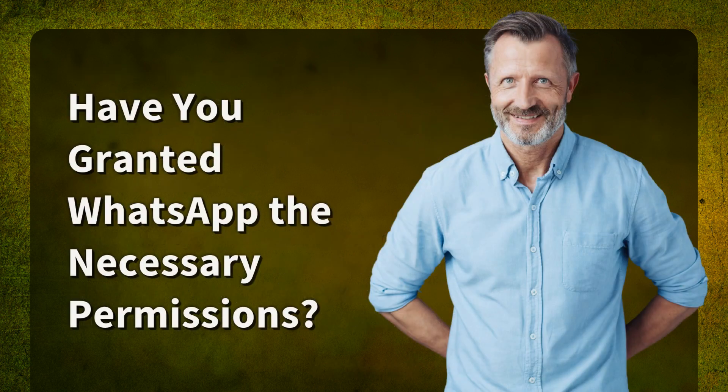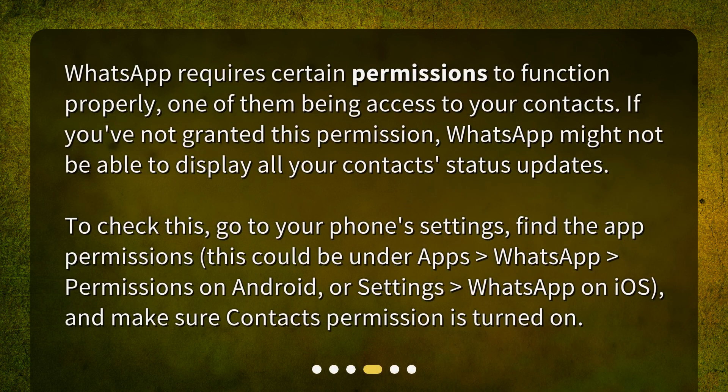Have you granted WhatsApp the necessary permissions? WhatsApp requires certain permissions to function properly, one of them being access to your contacts. If you've not granted this permission, WhatsApp might not be able to display all your contact status updates. To check this, go to your phone's settings and find the app permissions — this could be under Apps > WhatsApp > Permissions on Android, or Settings > WhatsApp on iOS — and make sure the contacts permission is turned on.